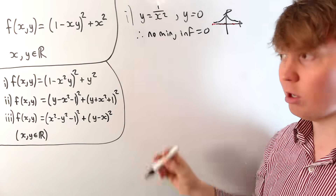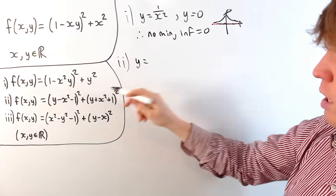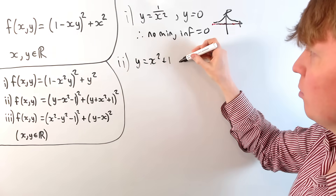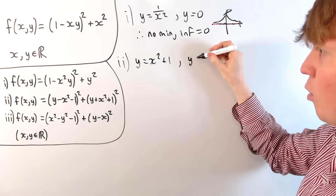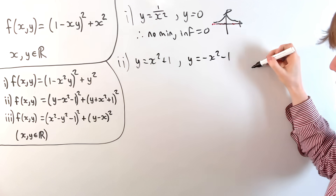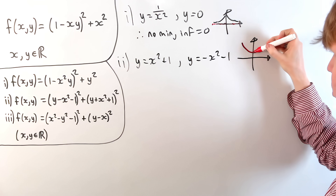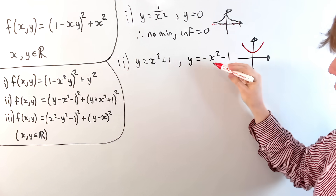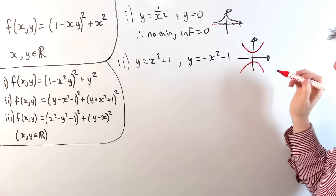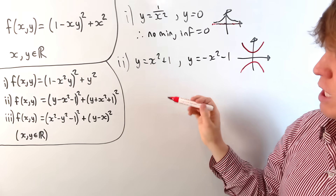So this one has no minimum again, and the infimum is equal to 0. We can think about this geometrically: the curves y = 1/x² and y = 0 don't overlap, so there's no minimum. But they can get closer and closer to each other, so we do get this infimum property of having 0. This becomes clearer if we look at a non-example. For our second function, to make it equal to 0 we would set y - x² - 1 = 0, giving y = x² + 1, and the second term is 0 when y = -x² - 1.